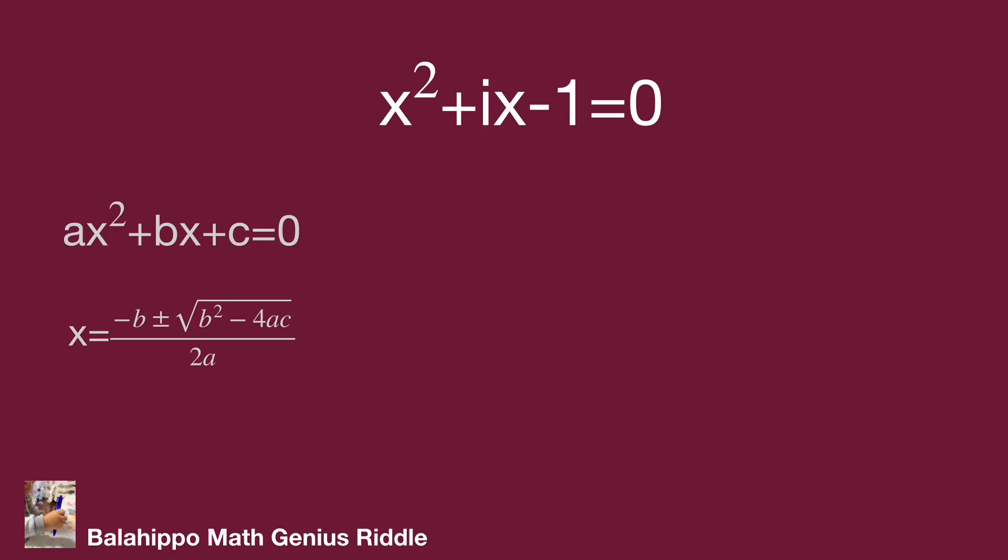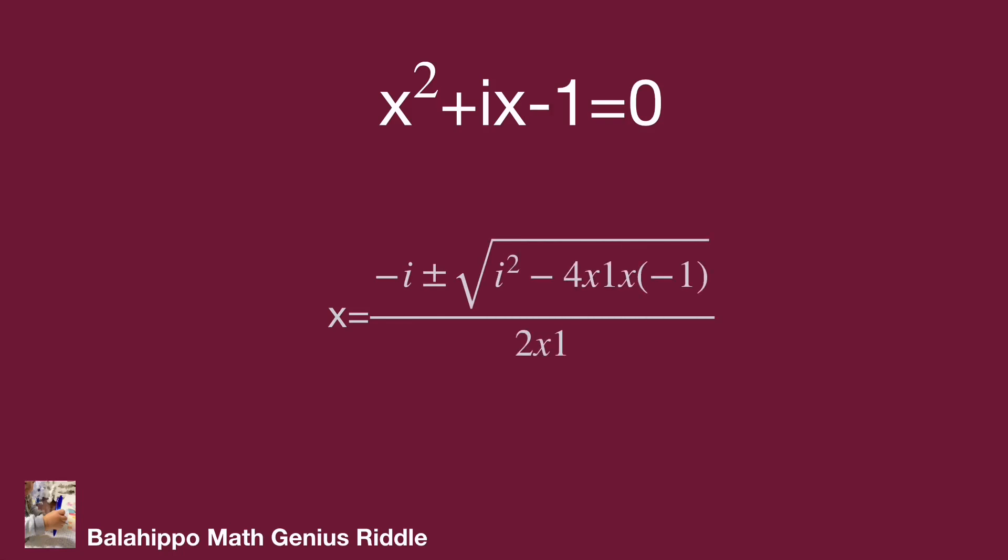Get x equals minus i plus or minus square root of i² minus 4 times 1 times (minus 1) over 2 times 1, equals minus i plus or minus square root of minus 1 plus 4 over 2. Get minus i plus or minus square root of 3 over 2. That's the other answer we get.